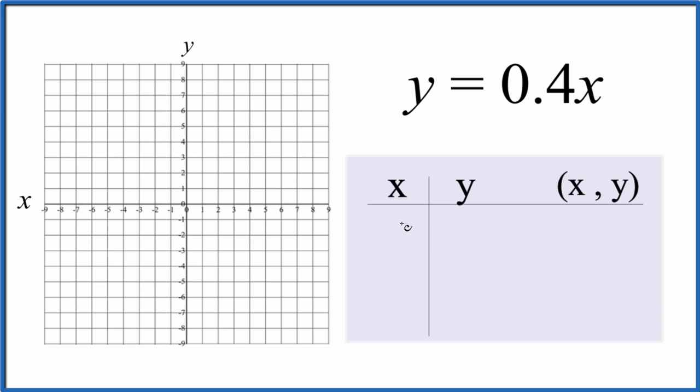I like to start with zero. You can choose any numbers but zero, 0.4 times zero, that just gives us zero for y. We could just put one in for x but I'd kind of like to have whole numbers here.